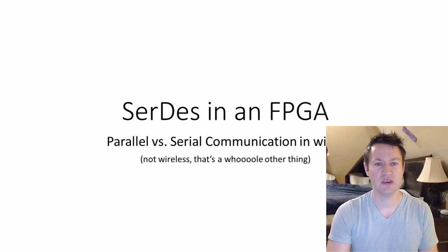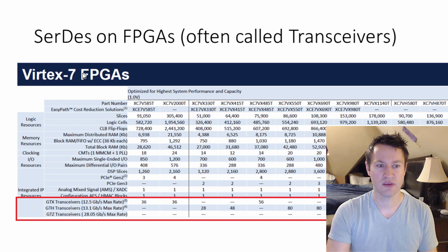You might have seen an FPGA data sheet that looks something like this. This is a Virtex-7 from Xilinx, and they call out something here: transceivers. There's three different types of transceivers with a max rate usually measured in gigabits per second, outlined here in this red box. If you've seen this before and you've never needed to use a SerDes transceiver, you might be wondering what these are for.